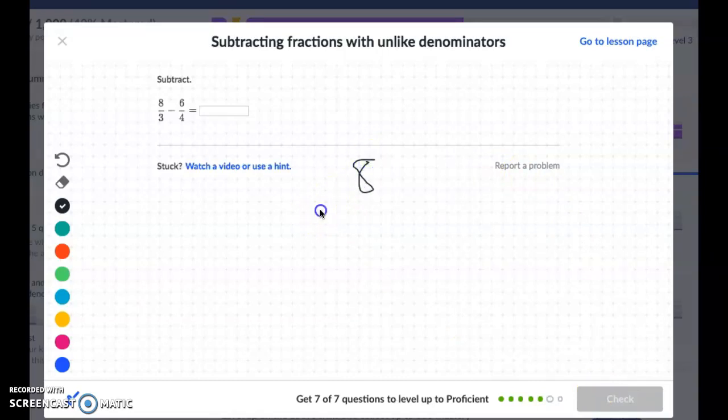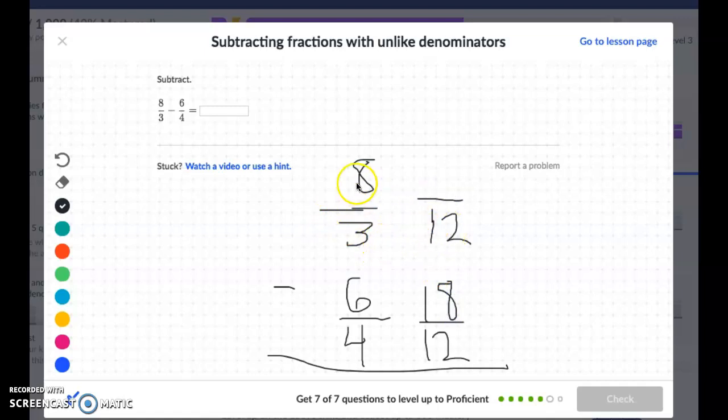So eight thirds minus six fourths. I'm going to change those both into a common denominator of 12 because 4 times 3 is 12. So here, 4 times 3 is 12, so I need to do 6 times 3, which is 18, to make sure I'm getting an equivalent fraction. 3 times 4 is 12, so 8 times 4 is 32, to make sure I'm getting that equivalent fraction.